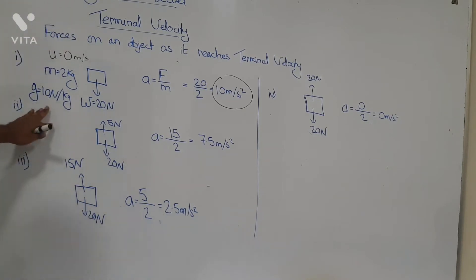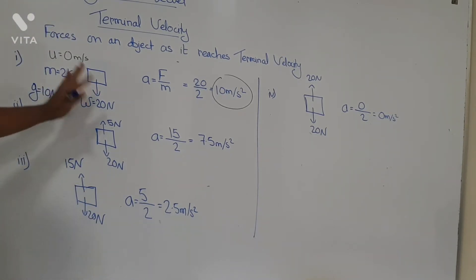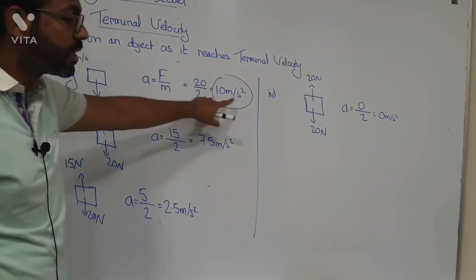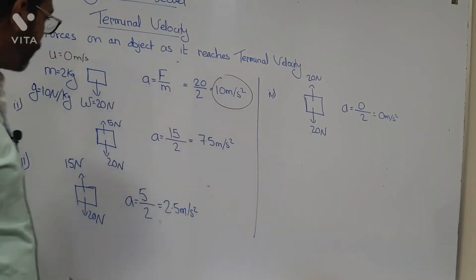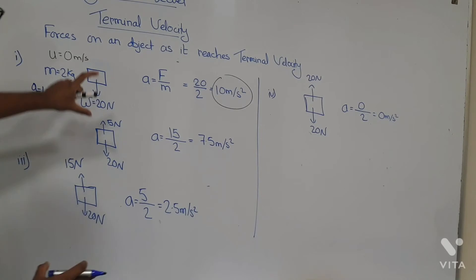In A-levels we take it as 9.81 N/kg, but let's keep it as 10 N/kg for this example. So the weight is 20 Newtons, and the acceleration we will find from here.